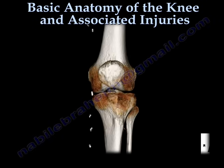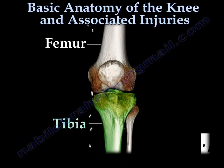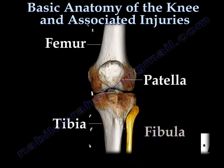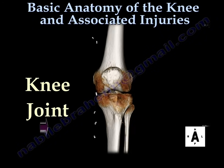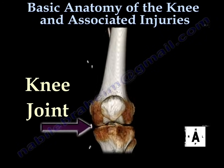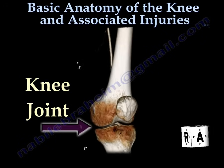The basic anatomical features of the knee include the femur, tibia, patella, and the fibula. The knee joint is the largest joint in the human body.